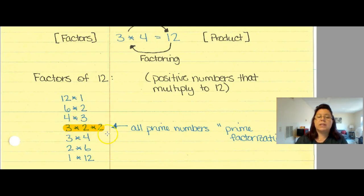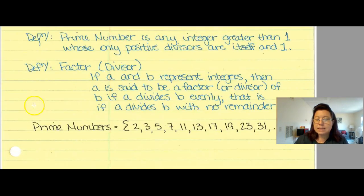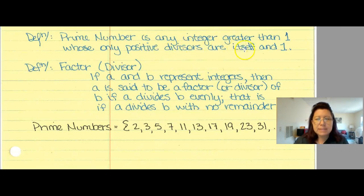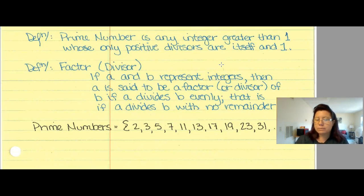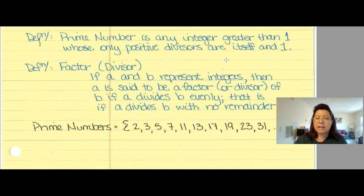Let's get down some terminology. A prime number is any integer greater than 1 whose only positive divisors are itself and 1. Therefore, 1 is not a prime number — it's not greater than 1. A factor, also known as a divisor, is a value that divides another value evenly. If A and B represent integers, then A is said to be a factor or divisor of B if it divides B evenly — that is, there's no remainder.